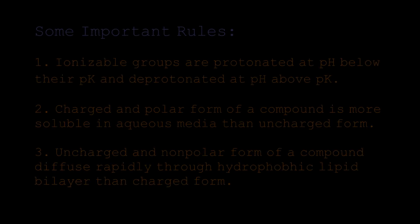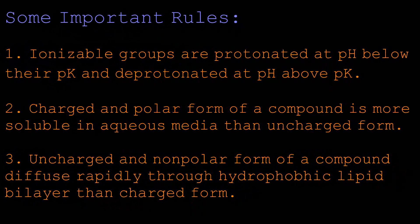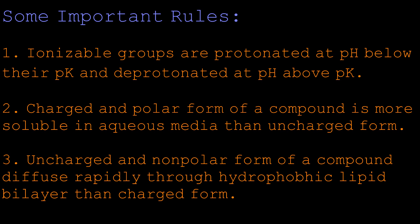To understand solubility and absorption across plasma membranes, we need to remember three rules. Rule number one: ionizable groups are protonated at pH below their pKa value and deprotonated at pH above pKa value. For an acid group, it has zero charge at pH below pKa because it is protonated, and becomes negatively charged above pKa. For a basic group, when protonated it becomes positively charged, and when deprotonated it becomes neutral.